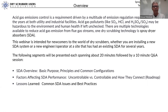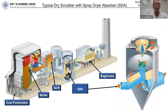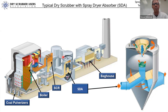Let's get started with the SDA overview and talk about basic purpose, principles, and common configurations. This is an illustration of a dry scrubber on the back end of a coal-fired power plant. The components are the SDA — the spray dryer absorber vessels — and a fabric filter or baghouse. The SDA is shown in a two-absorber parallel configuration taking flue gas off the boiler, through a selective catalytic system for NOx removal, then two SDAs with a common baghouse, ID fan, and stack.